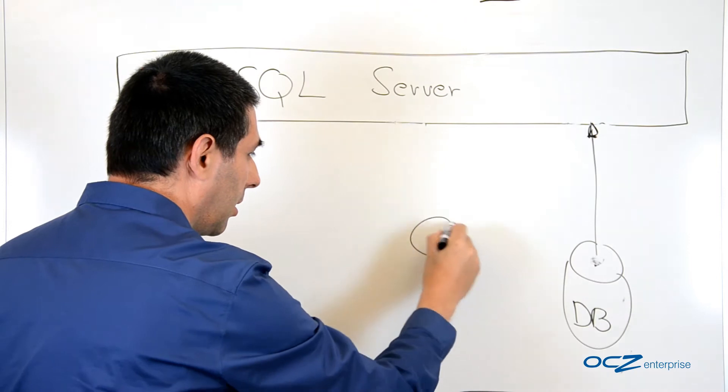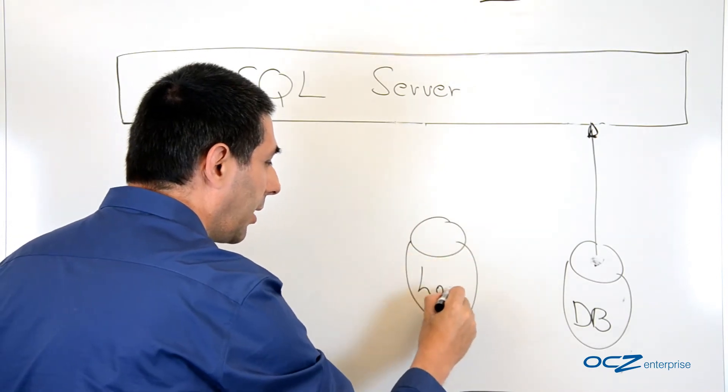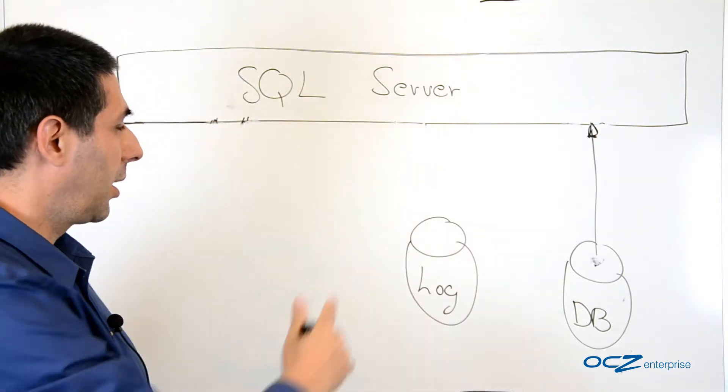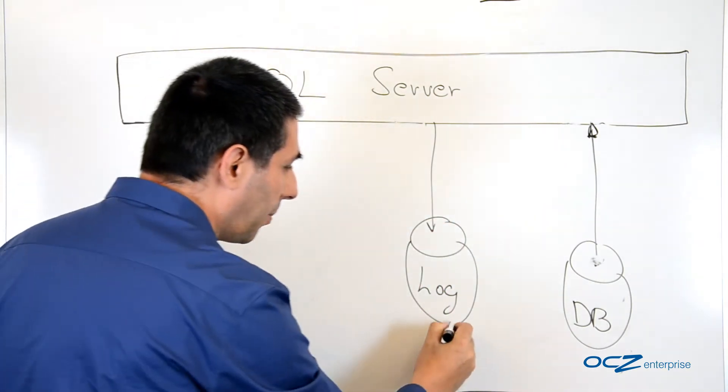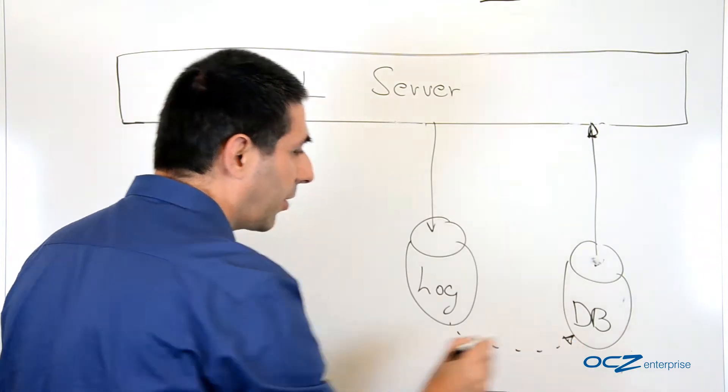The second type of data is the write-ahead log or the log file. The SQL Server writes incoming data, insertions and so on towards the log. And in a background process, it transfers it to the database.